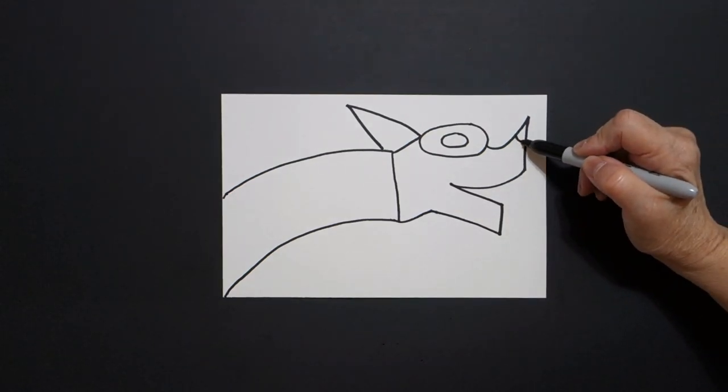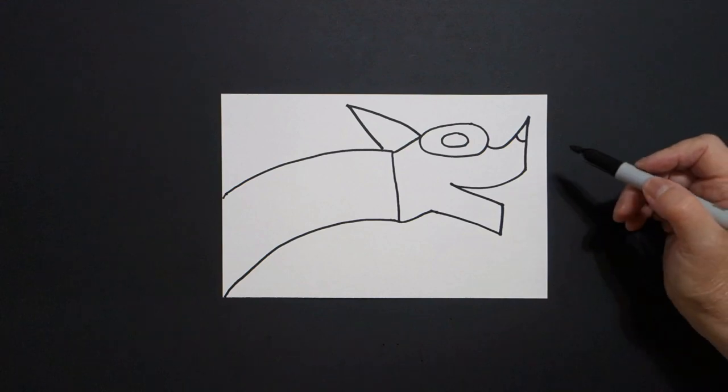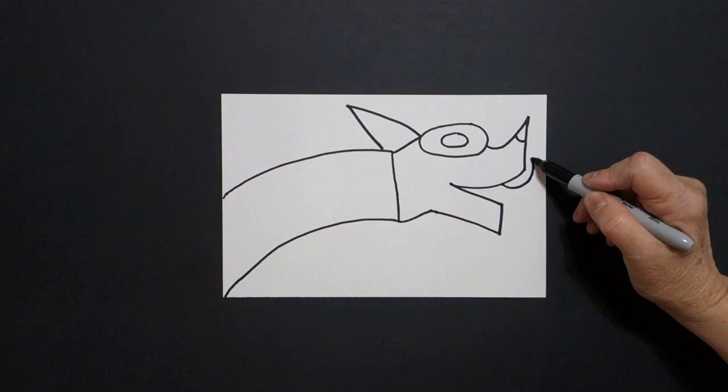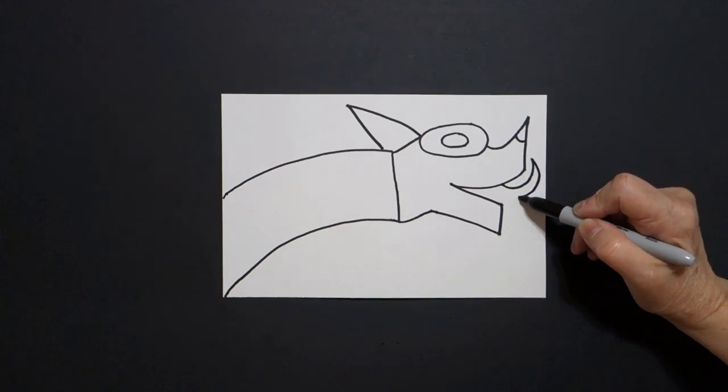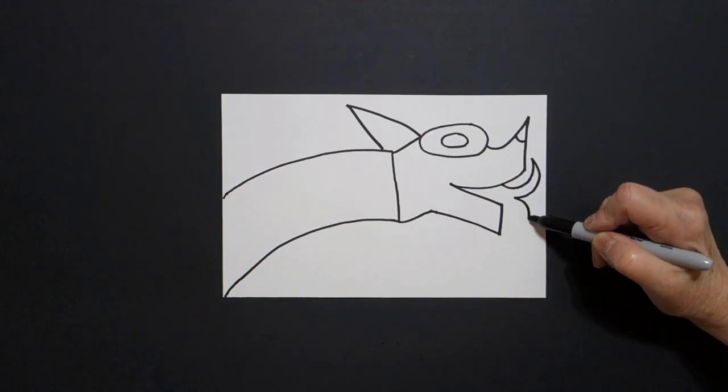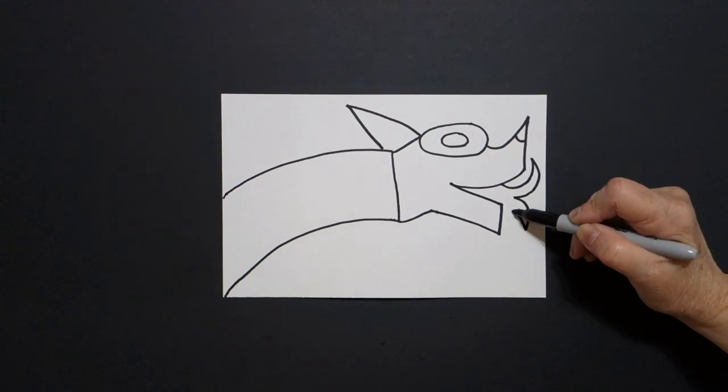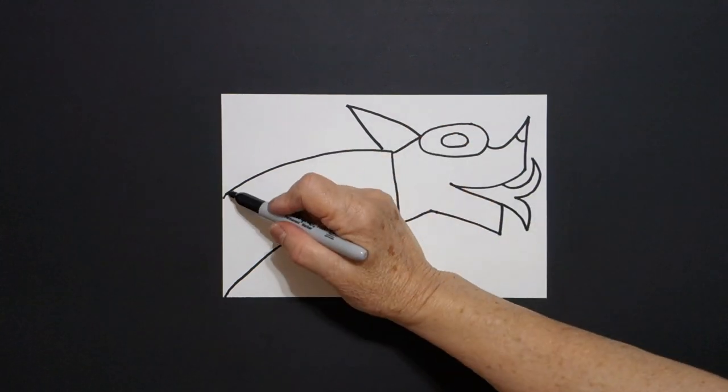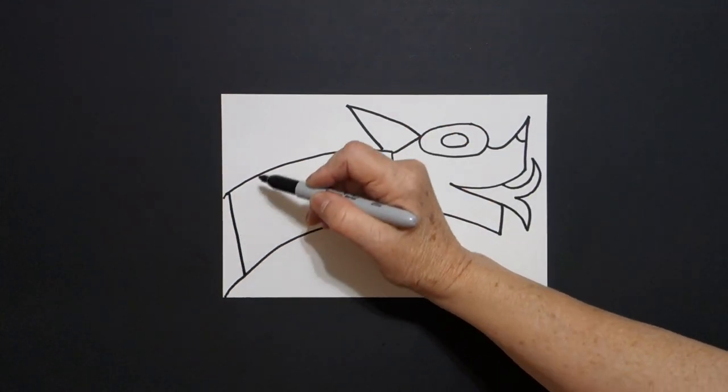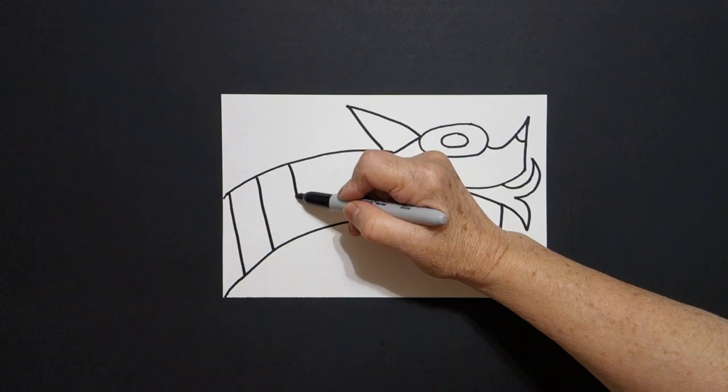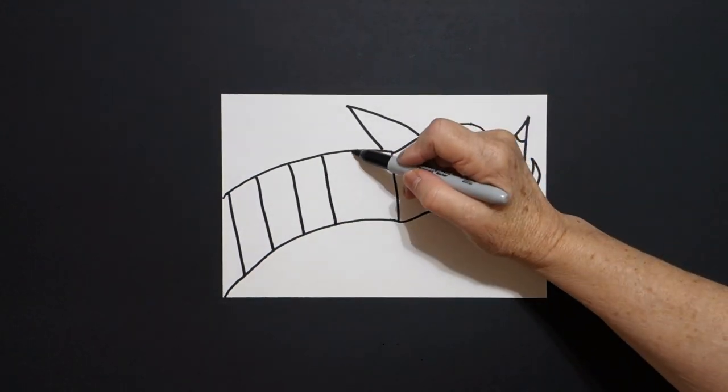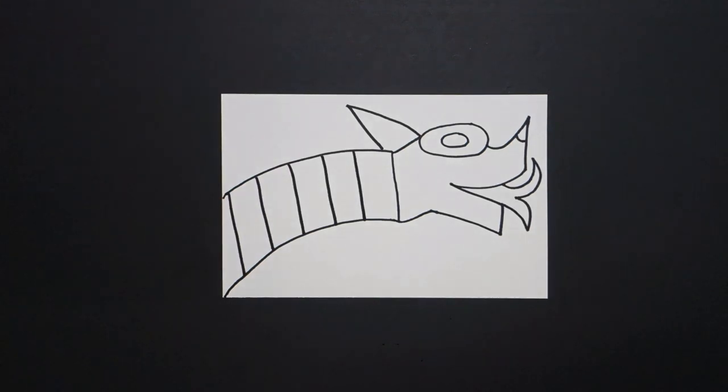Right up here we're just going to put a little curved line in, curve line down, curve line up, connect. Come inside this big space here and we're just going to add straight lines, keep going, straight line, connect. Okay, let's see how we're going to color this in.